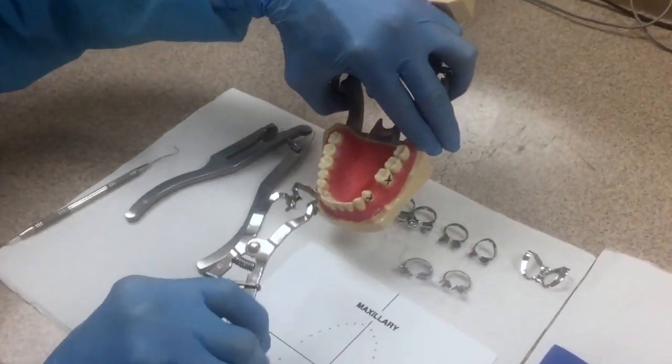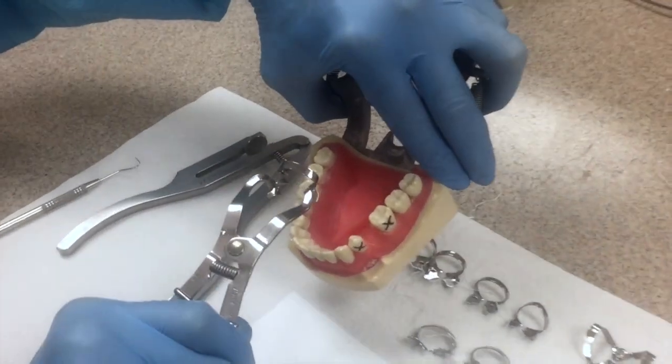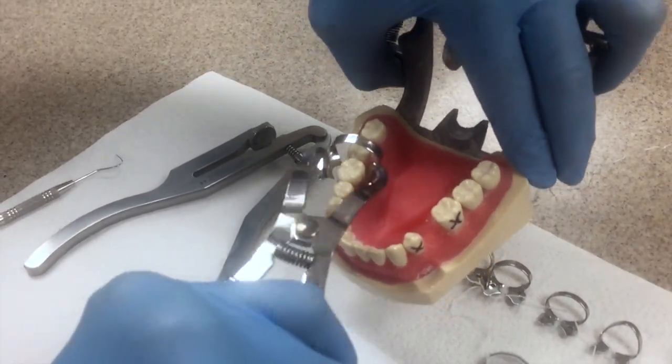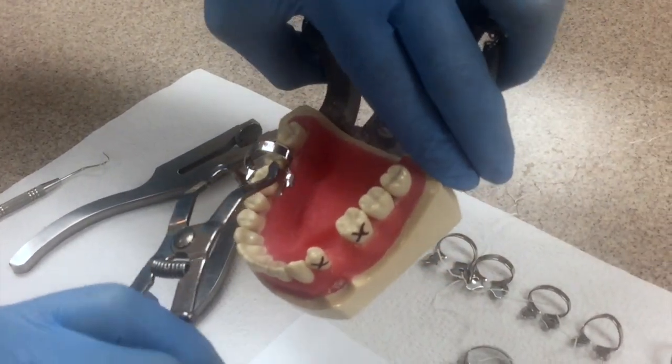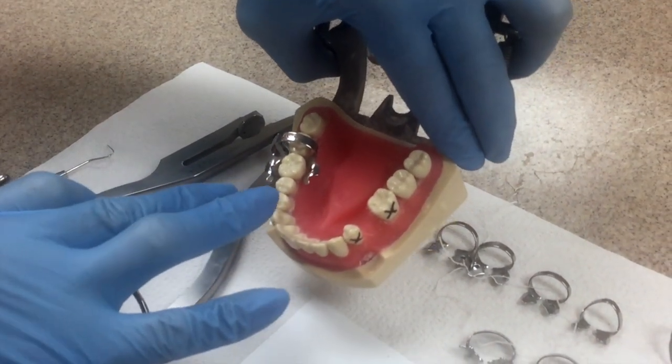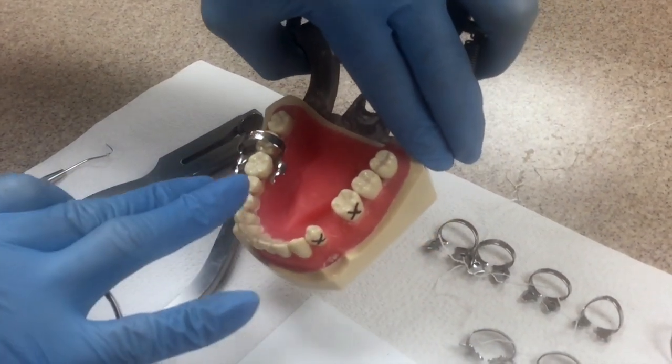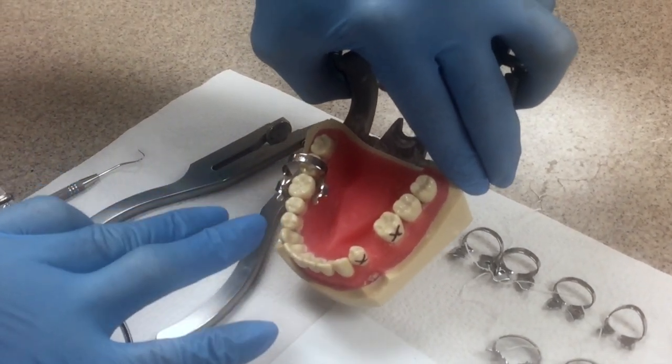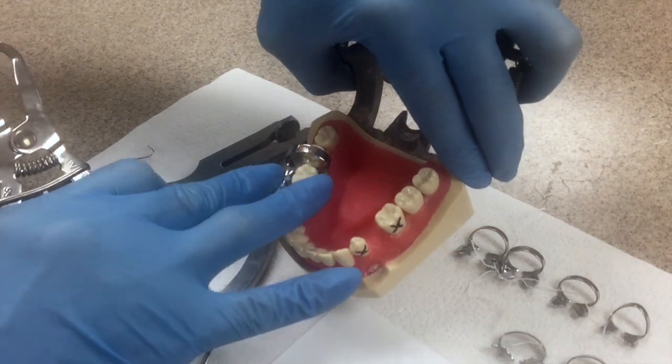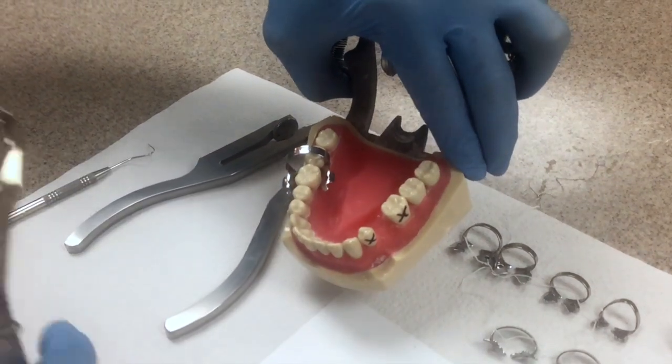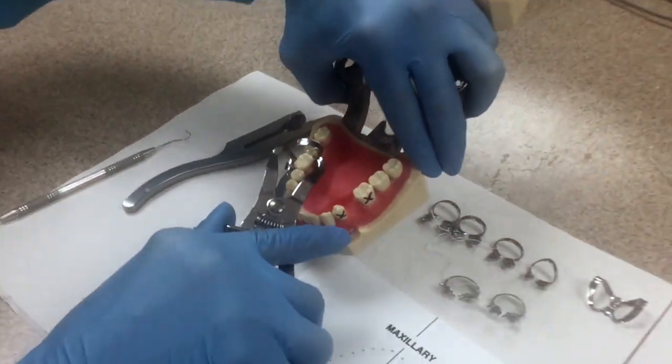Here's our rubber dam. We squeeze the handles together. We put the prongs on the lingual first and then we roll over to the buccal. We always want to make sure that the clamp is going to fit. We hate to assemble all of this in the patient's mouth with the rubber dam attached and then the clamp flies off. So we wiggle it with our fingers to make sure it's not going to come off.